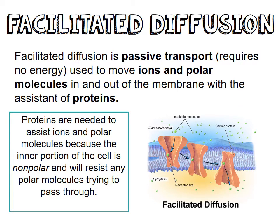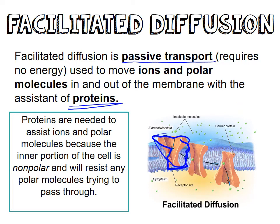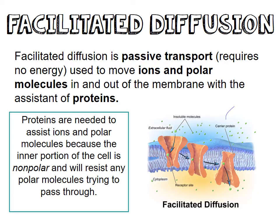Facilitated diffusion is also passive. It requires no energy to move ions and polar molecules in and out of the membrane, but it has to use proteins. Proteins are needed to assist ions and polar molecules because the inner portion of the cell membrane is nonpolar, and it will resist any polar molecules trying to pass through. So the polar molecules go through carrier proteins — it doesn't require any energy, and it's easy for them to get in and out.